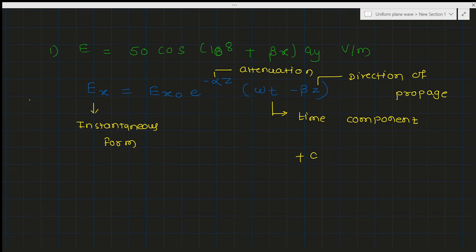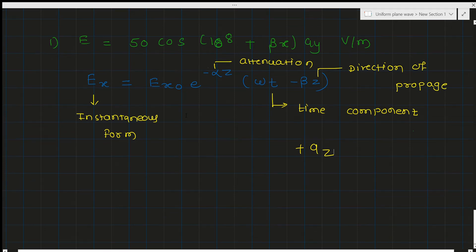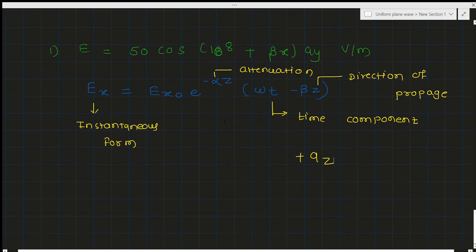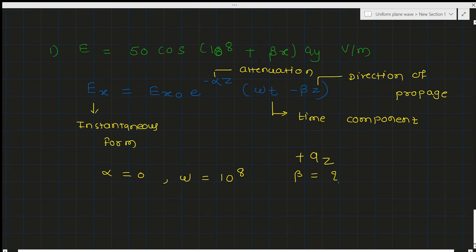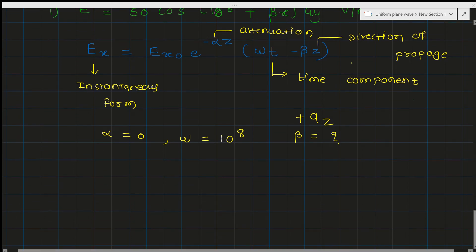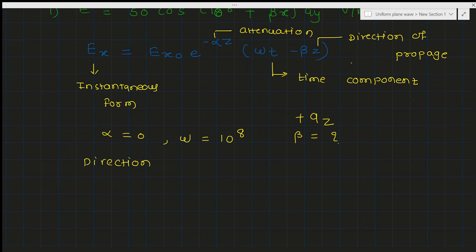Comparing with the given equation: alpha is equal to zero, omega is equal to 10^8. Beta is not given, so we need to calculate it. Since the term is plus beta x, the direction of propagation is in the negative x direction.